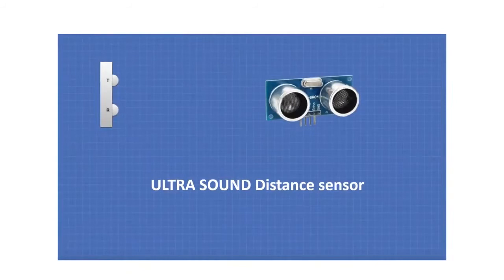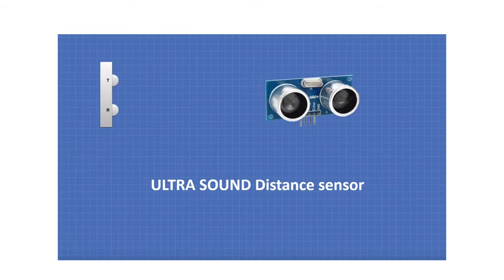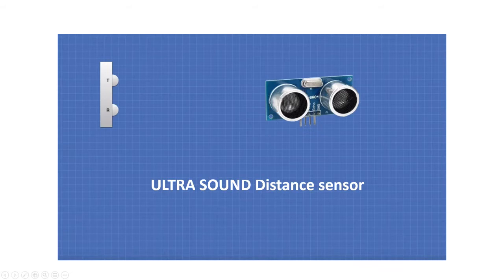Let's talk briefly about the sensors we have. These are the basic ones that come with the standard Arduino kit. One that is very obvious is the ultrasound distance sensor. We call it the ultrasound distance sensor because we want to understand when we use it and how it works — you should only use what you understand well.